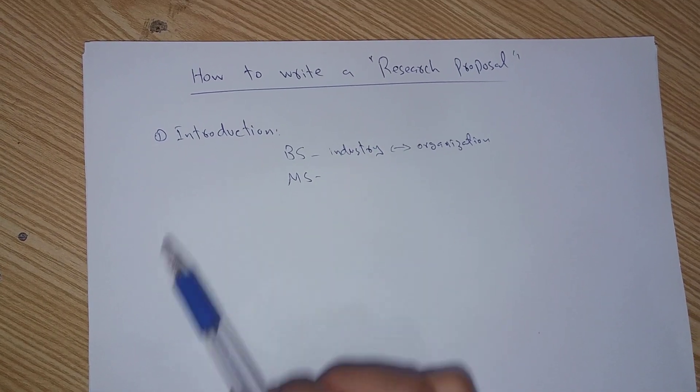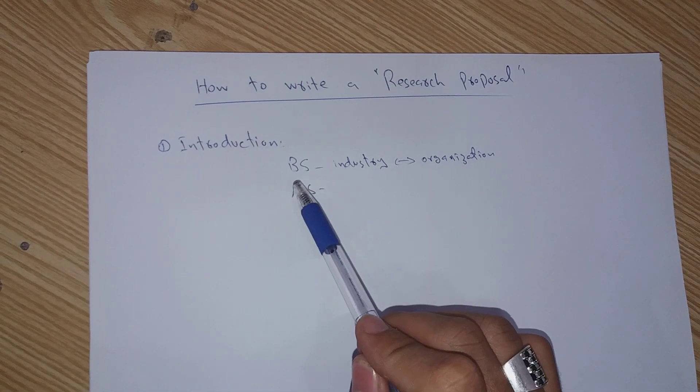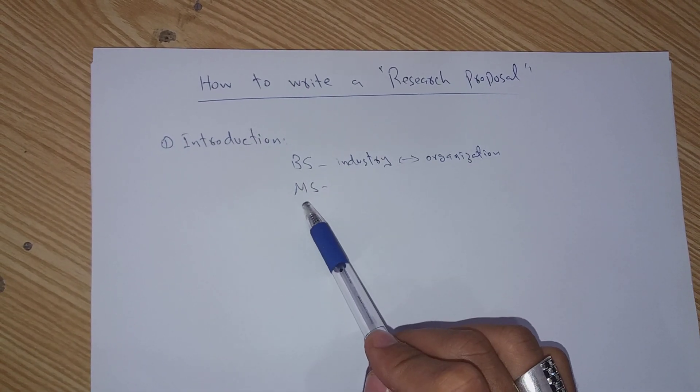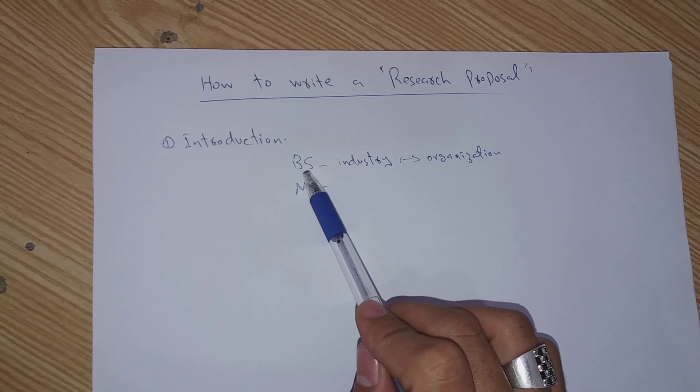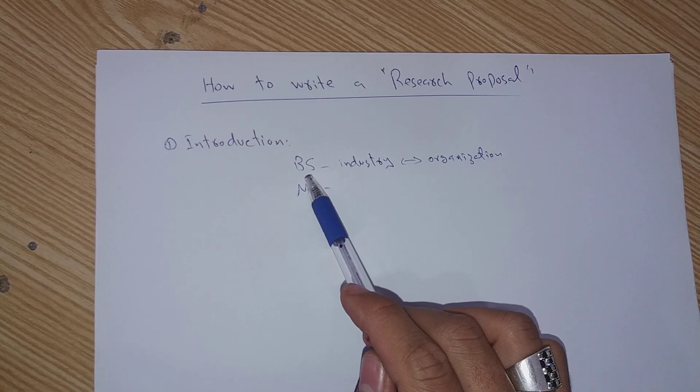The first heading is introduction. Now it depends whether you are writing a research proposal for BS level or for MS level, because normally in BS we create a proposal for a project.